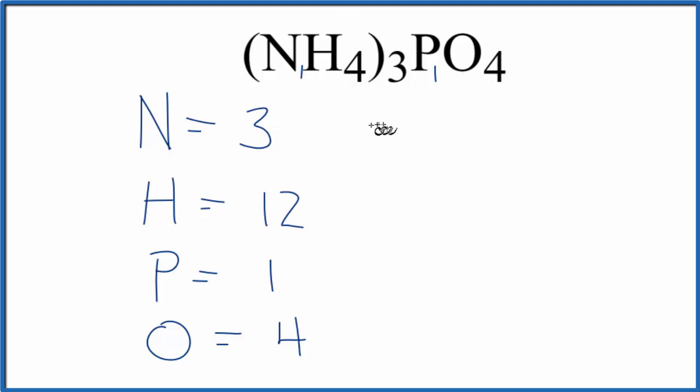Sometimes you'll be asked to find the number of, for example, nitrogen atoms in 1 mole of ammonium phosphate. To do that, we just multiply the number of nitrogen atoms by Avogadro's number. So 3 times Avogadro's number gives us this many atoms of nitrogen in 1 mole of ammonium phosphate.